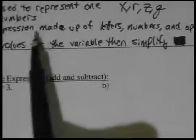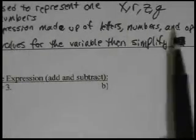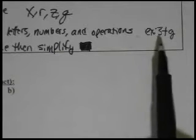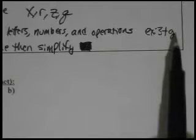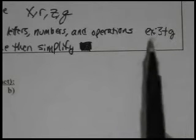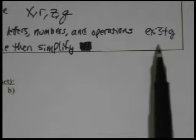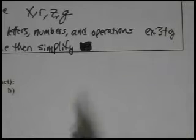Secondly, a variable expression. A variable expression is an expression made up of letters, numbers, and operations. And I have an example here. For example, 3 plus G. Notice, there's no equal sign in there. Just letters, numbers, and operations, like add, subtract, multiply, or divide.